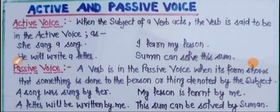Active voice کیا ہے: When the subject of a verb acts, the verb is said to be in the active voice. جب ایک فعل کا فاعل عمل کرتا ہے تو ہم کہتے ہیں کہ verb active voice میں ہے۔ مثلاً: She is singing a song — یہاں subject کام کر رہا ہے۔ I learn my lesson — subject acts۔ He will write a letter — subject acts۔ Someone can solve this sum — subject acts۔ یہ سب active voice ہیں۔